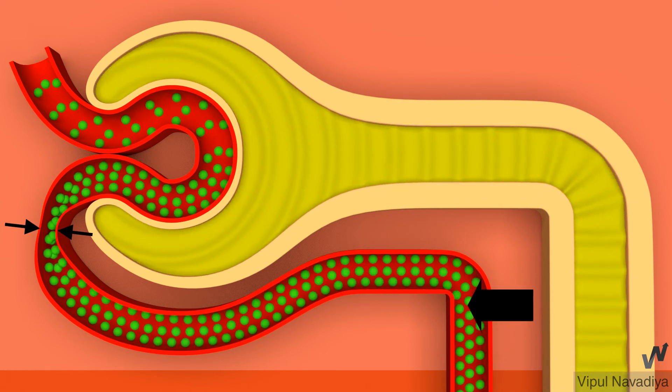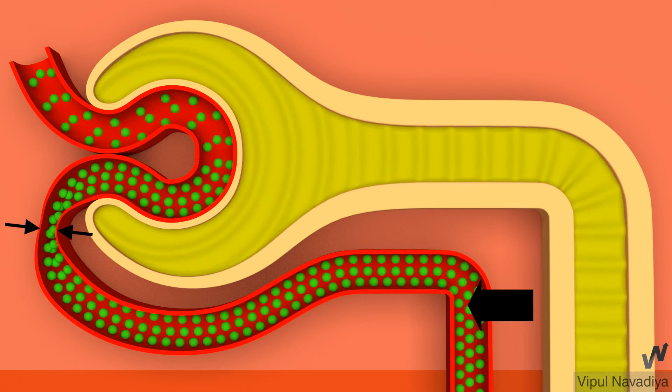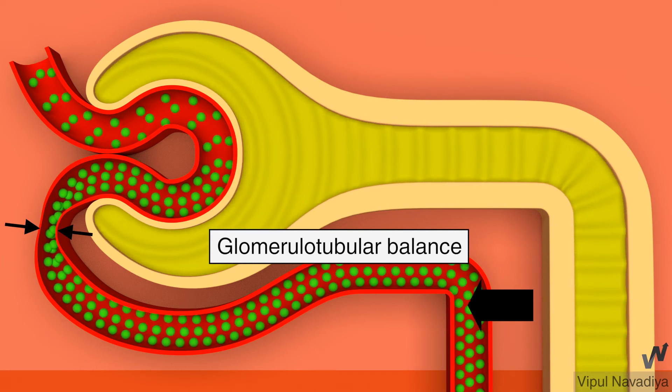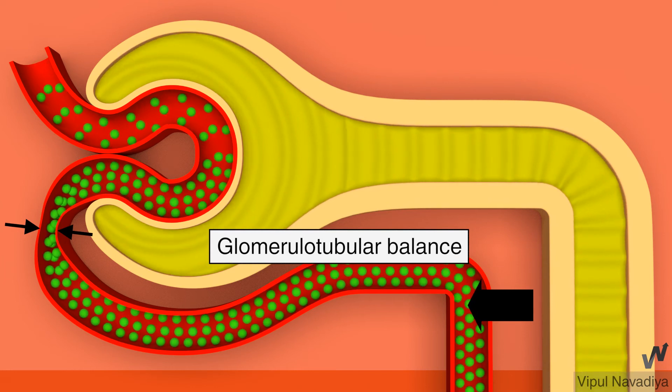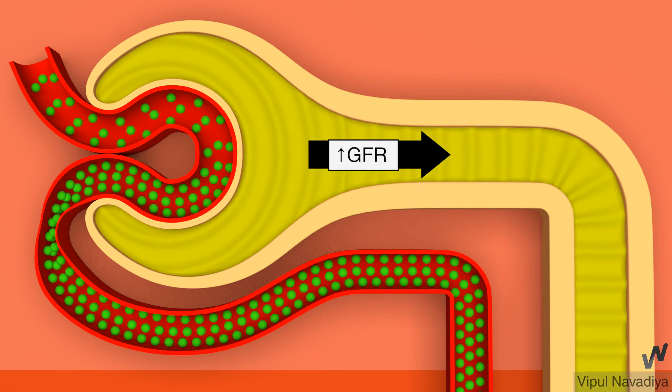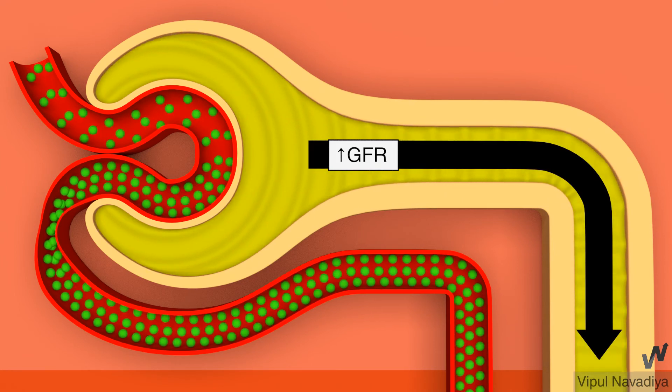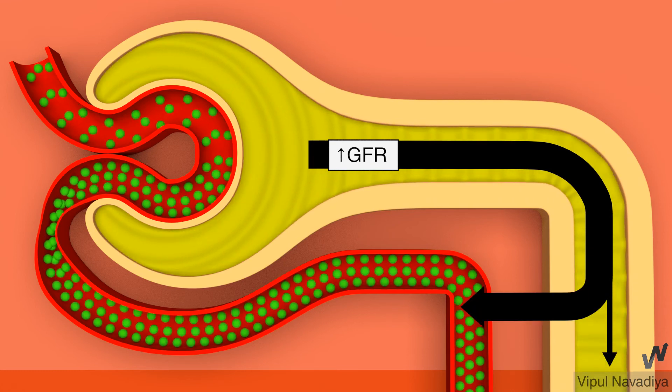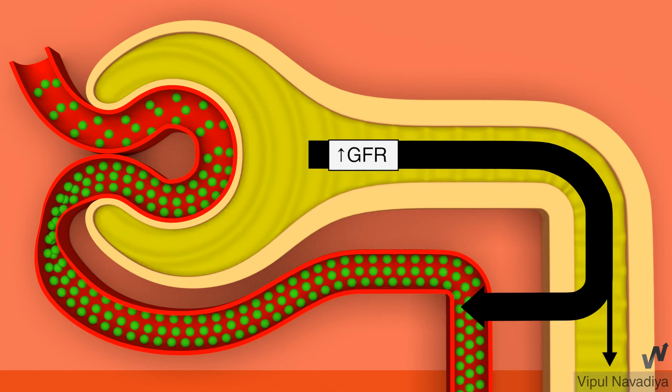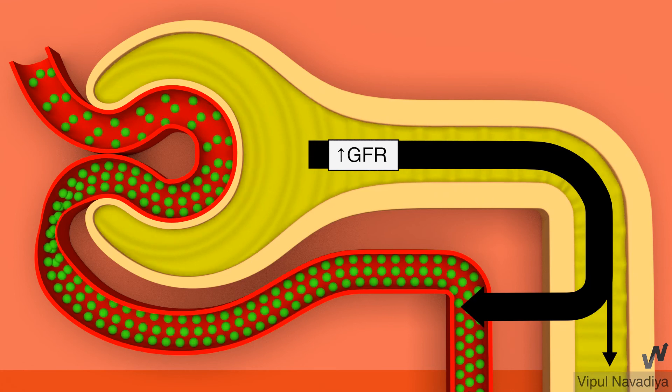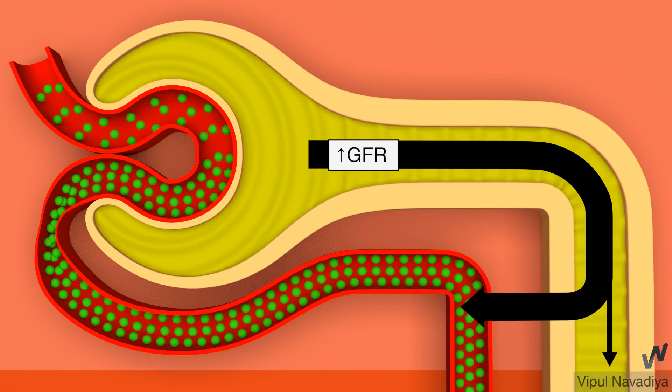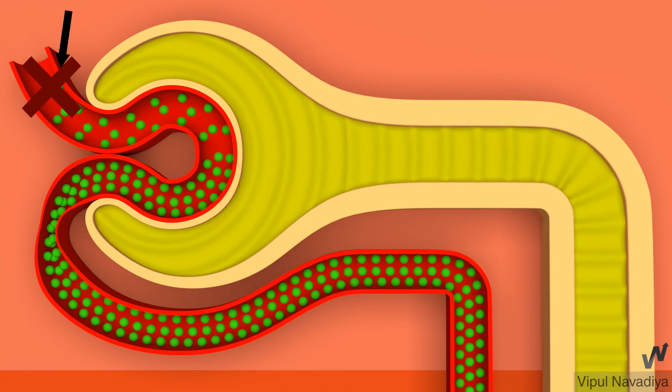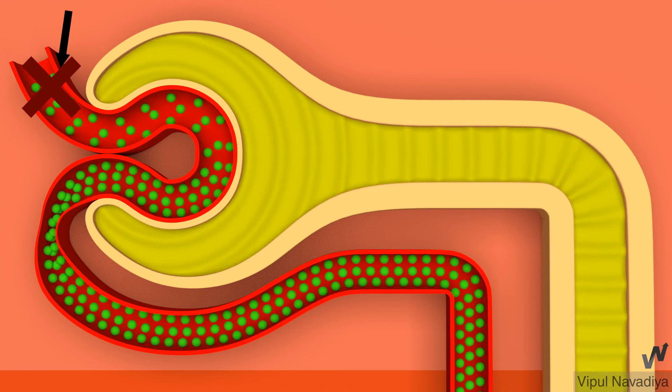Such changes in tubular reabsorption are an important part of glomerulotubular balance. Glomerulotubular balance basically compensates for changes occurring in GFR. For example, here increased GFR tends to increase excretion of sodium and water. But simultaneous increase in net tubular reabsorption by these pressure changes counteracts that increase in excretion. One more thing: such effects are not seen with changes in afferent arteriolar resistance because it does not affect filtration fraction.